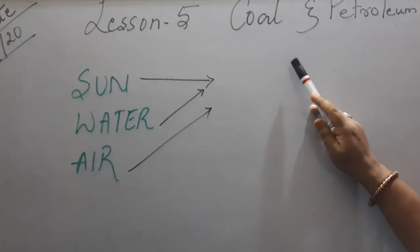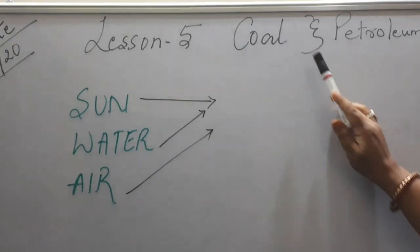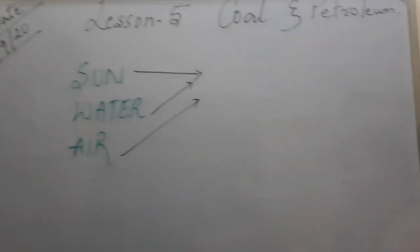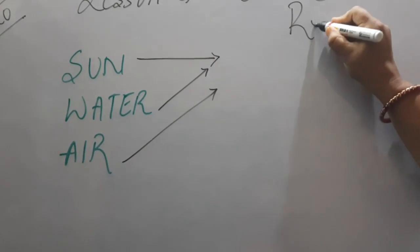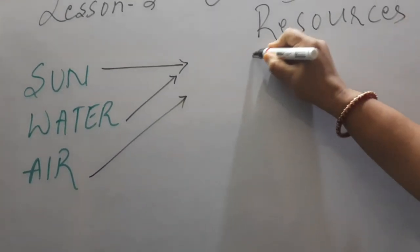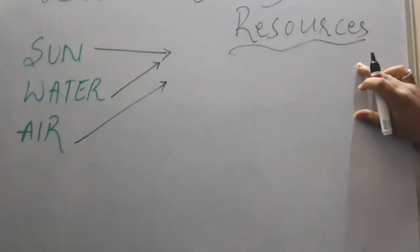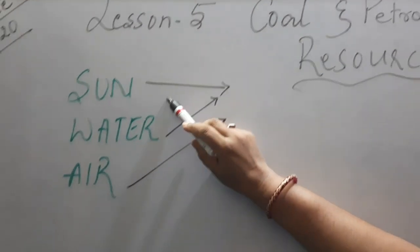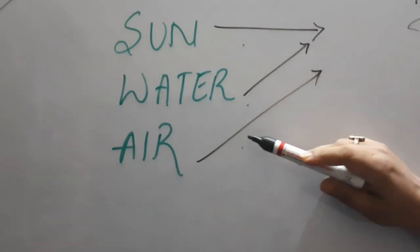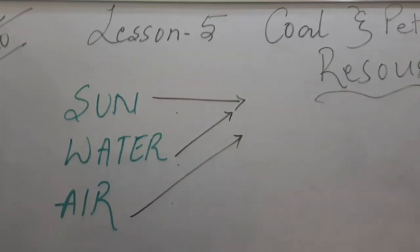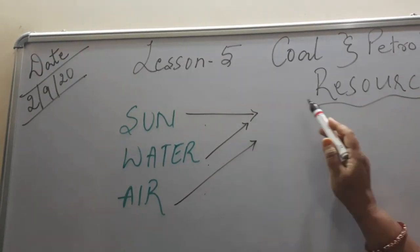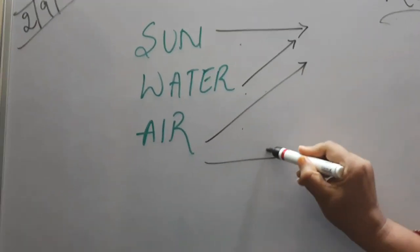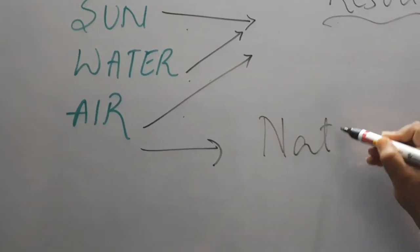This lesson is Coal and Petroleum. Before I start with the chapter, let me explain the term 'resources.' What do you understand by the term resources? Resources means what we require. We require sunlight from the sun, we require water, we require air — all these things we require to survive on this planet. So these are our resources, and because they are present in nature, they are considered natural resources.